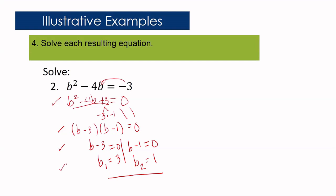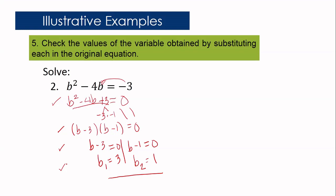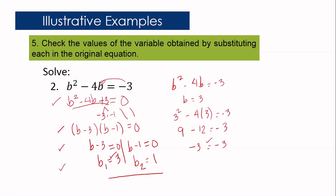Step 5: Check using the original equation b squared minus 4b equals negative 3. If b equals 3: 3 squared minus 4 times 3 equals 9 minus 12 equals negative 3. Correct. If b equals 1: 1 squared minus 4 times 1 equals 1 minus 4 equals negative 3. Correct. So b₁ equals 3 and b₂ equals 1 are the solutions of the given quadratic equation.